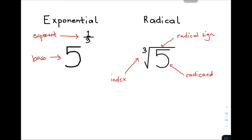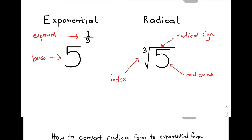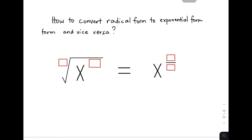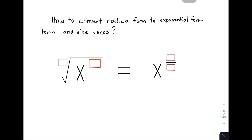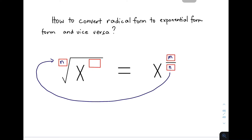So I think we are ready to discuss how to convert expressions with rational exponents to radical expressions. Here's the question: how do we convert radical form to exponential form and vice versa? So we have a base raised to the exponent of m over n. To convert this to radical form, the denominator n of your exponent will become the index of the radical expression, while the numerator of the exponent will become the exponent of the radicand. Though they are in different form, they are equal.